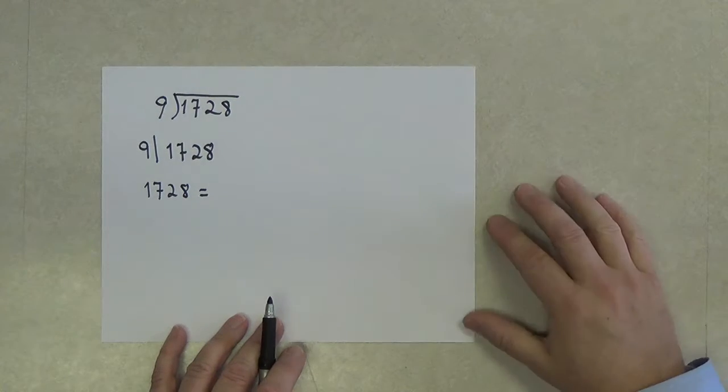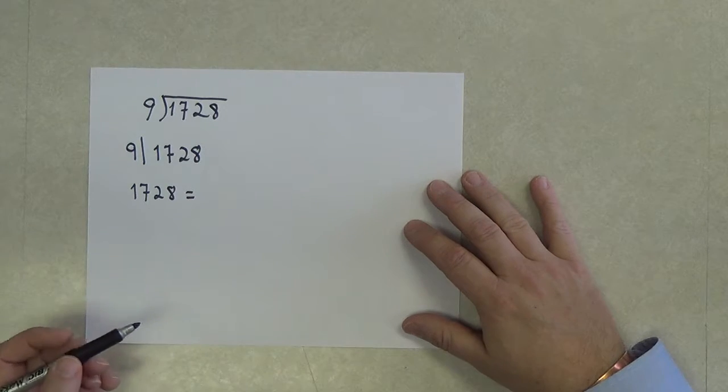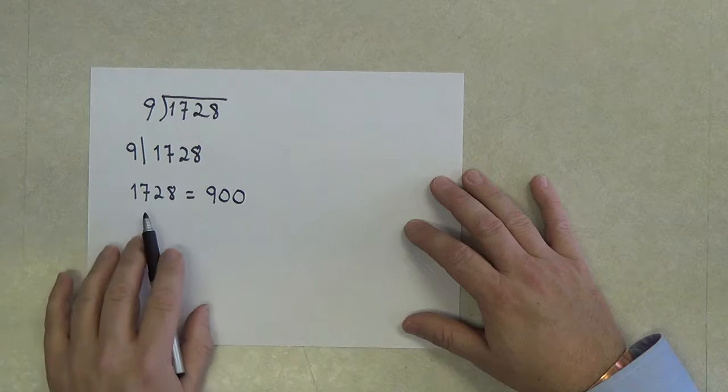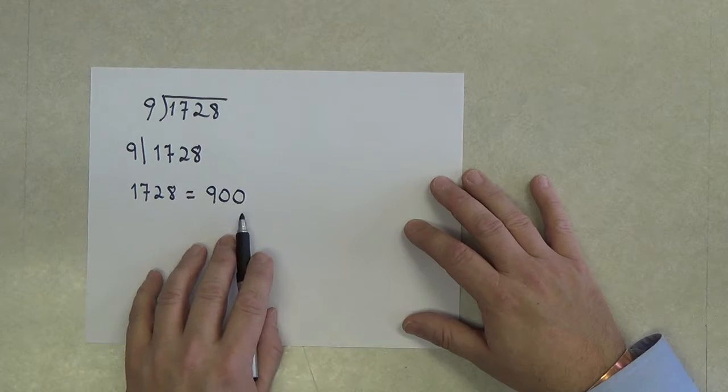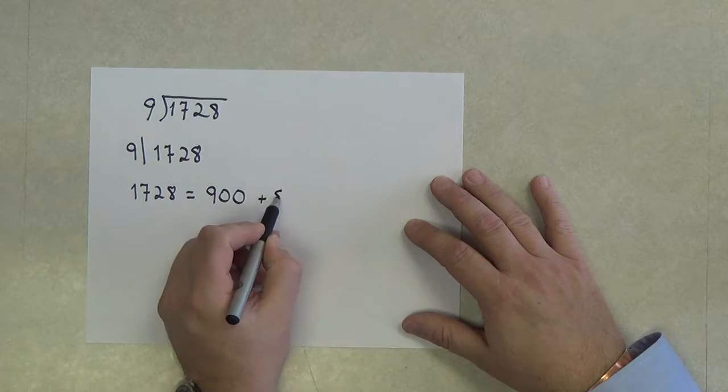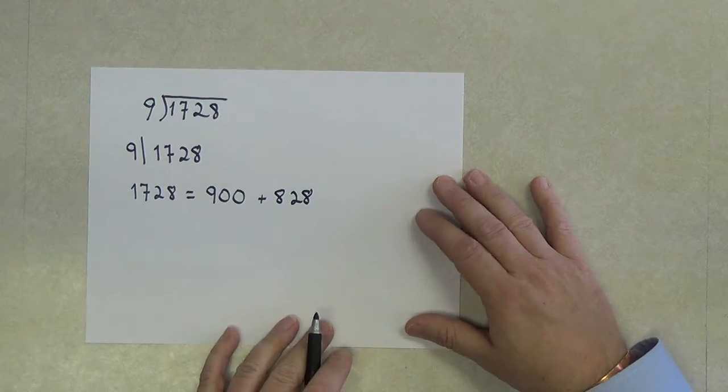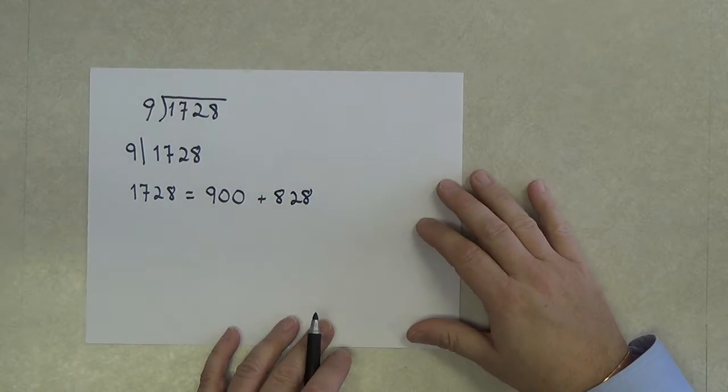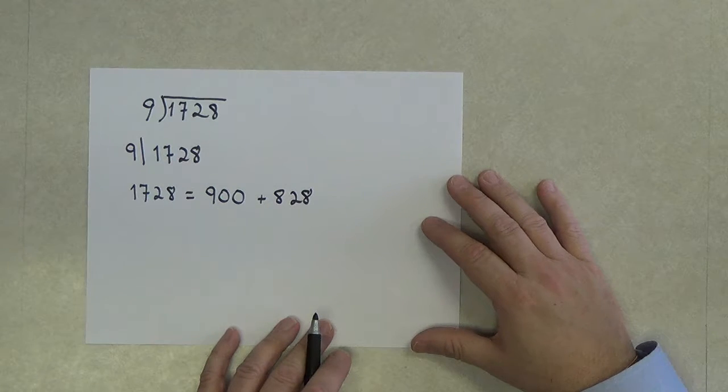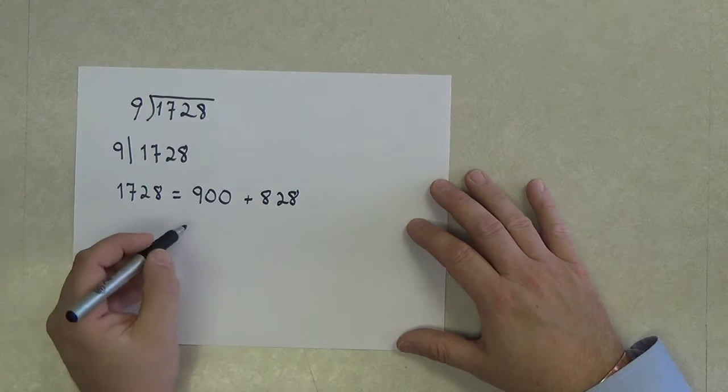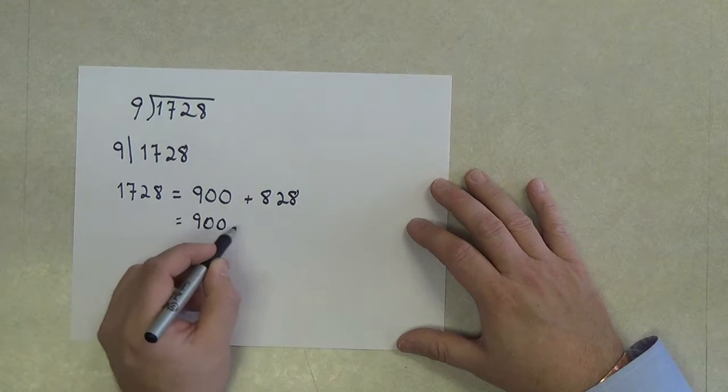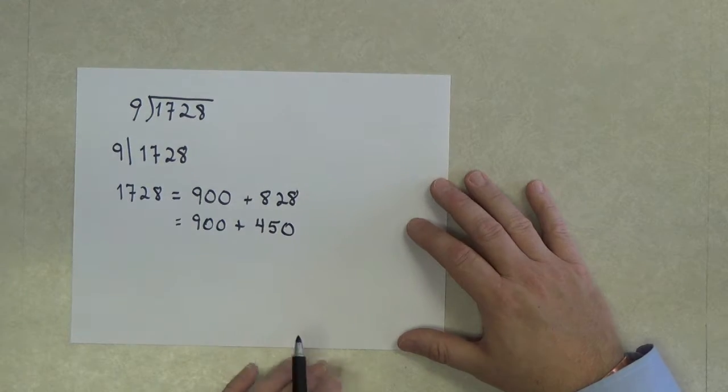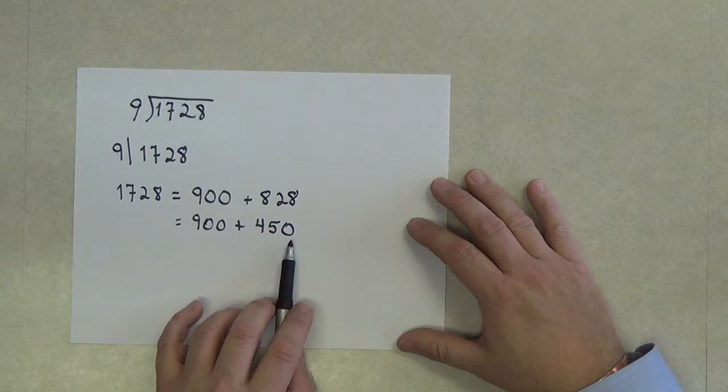Well, just off the top of my head, I know several things about 9. One of them is that 9 times 100 is 900. So I know 1,728 is 900 plus 828. Well, that's pretty good. Let's see what else I might know about 9. Well, I know 9 times 5 is 45, and I'm going to use that to claim that I know that 450 must be a multiple of 9 because 450 is a multiple of 45.